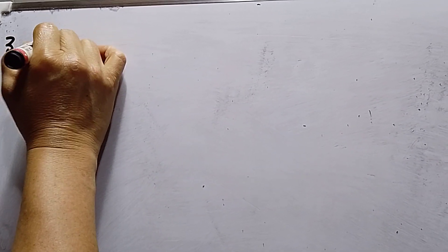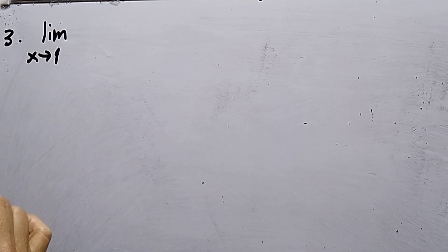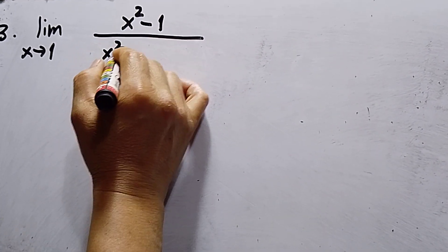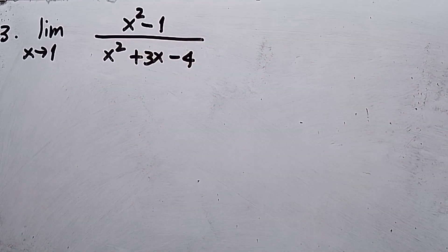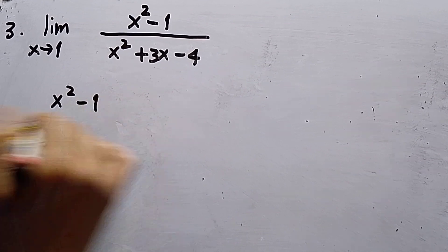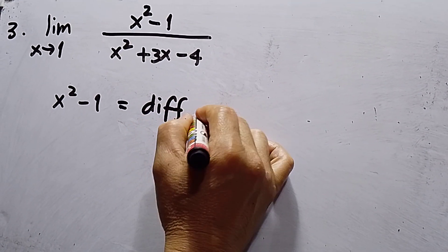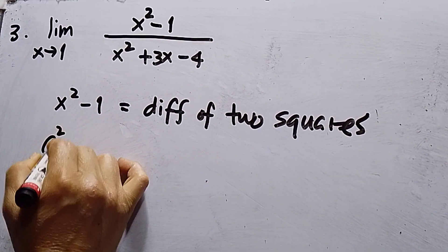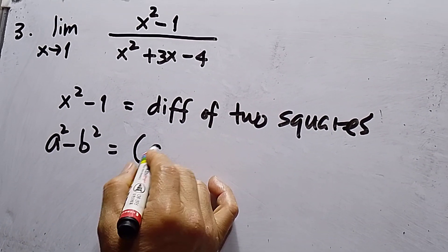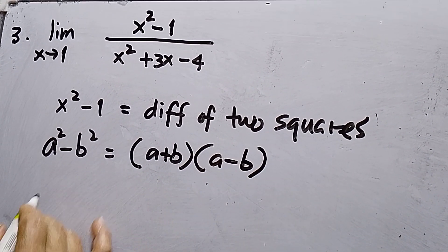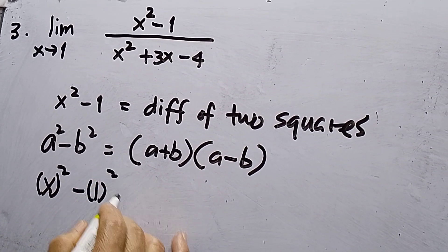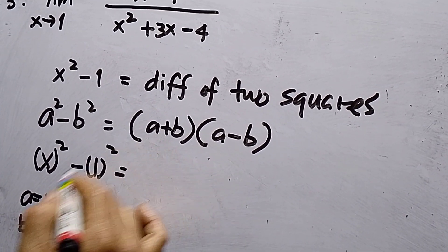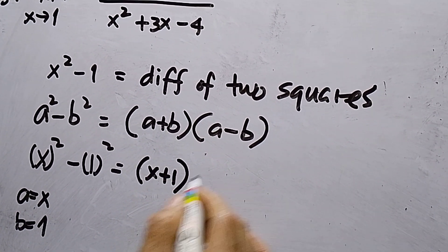Number three: limit x approaches positive 1, function is x squared minus 1 all over x squared plus 3x minus 4. Look at the numerator — x squared minus 1 is a difference of two squares. Recalling our algebra: a squared minus b squared equals (a plus b)(a minus b). Since we have x squared minus 1 squared, my a is x and b is 1.